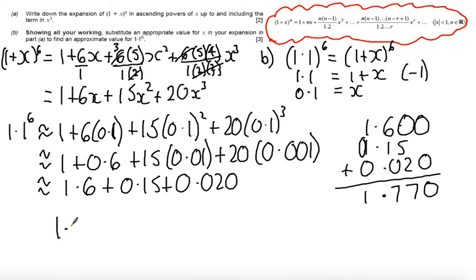So 1.1 to the power of 6 can be approximated as 1.77. Let's have a look to see how the marks are awarded in this question. You get 2 marks if you get to the full correct expansion. If you've got 3 correct terms, any 3 correct terms, you can have 1 mark.